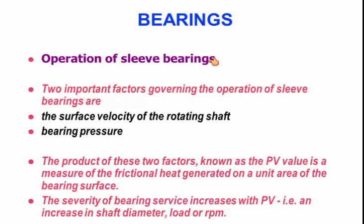Two things are vital to standard sleeve bearings or journal bearings: how fast the shaft turns, and how much oil pressure we have, or how much bearing pressure there is pushing the two surfaces together. The faster the rotating shaft and the more force pushing the two parts together, the higher the oil pressure needed to keep them apart. We have bearing pressure and velocity, so the product of those two is called the PV value.